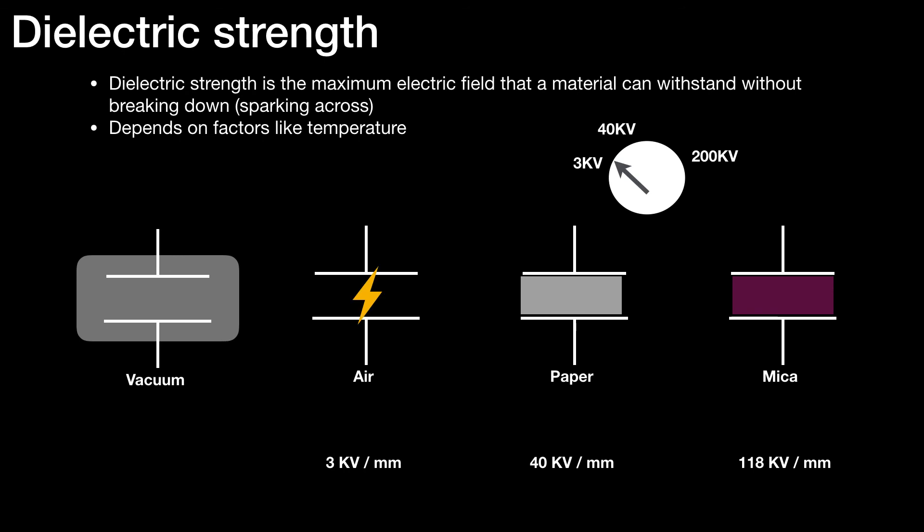So if we turn our voltage up on the right-hand side, we've got a pictorial voltmeter. We've turned the voltage up to above 3 kilovolt and the air capacitor has now sparked across and is useless to us.